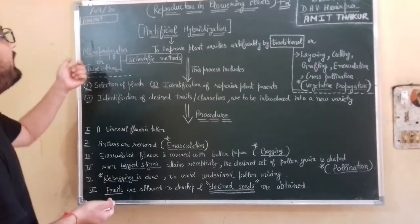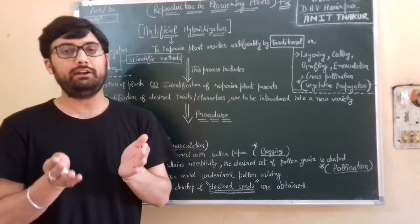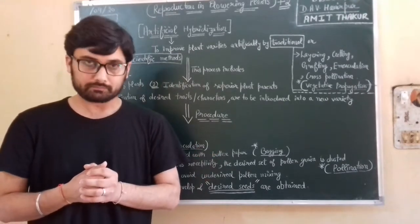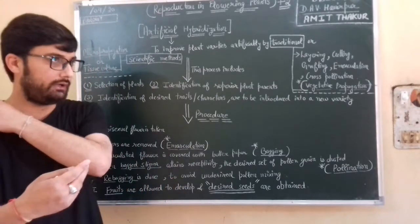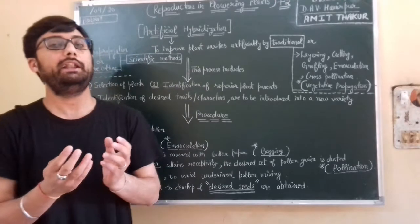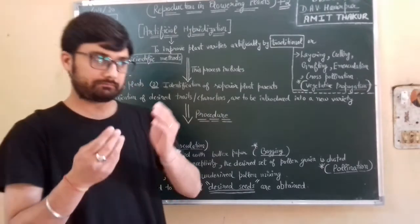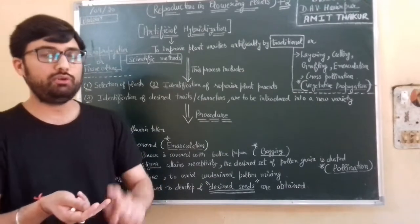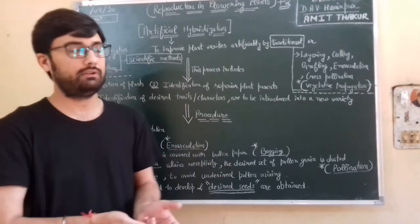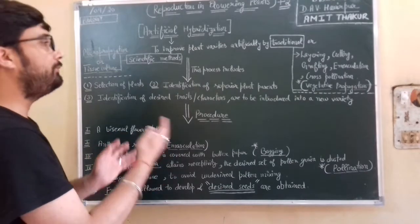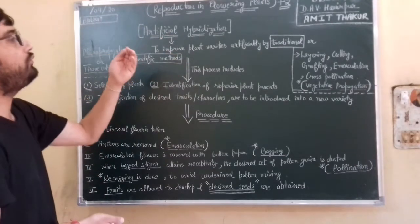Like micropropagation, which is also known as tissue culture in the lab. How do we exchange the desired traits and characters of two different plant varieties in order to develop all new hybrid varieties, which is an improved variety of that plant? Maybe in case of its nutritional value, immunity, its yield, which could be beneficial for human welfare. In the lab, we can improve the plant different varieties time to time. So what is artificial hybridization? It is to improve plant varieties artificially by traditional or scientific methods.